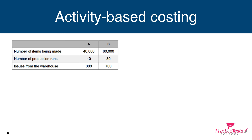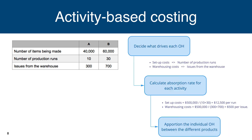We aim to make 40,000 A's and 60,000 B's. Product A is planned in 10 production runs and product B in 30 production runs. Issues from the warehouse for product A over the year are estimated at 300 issues, and for B, 700 issues. Rather than have one absorption rate for the whole $1 million, we break it down into setup costs and warehousing costs. The first step is to decide what drives each overhead — for setup costs, the number of production runs; for warehousing costs, the number of warehouse issues.